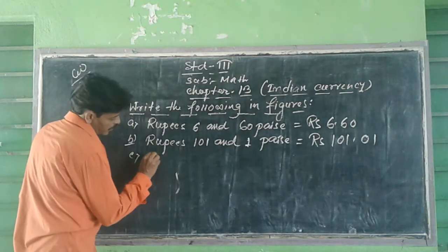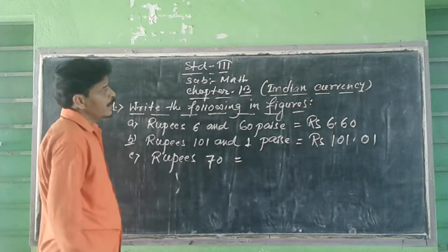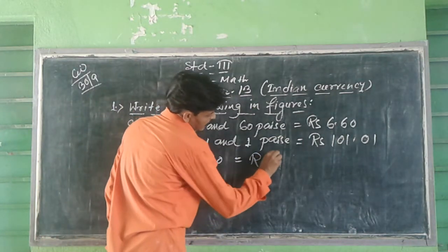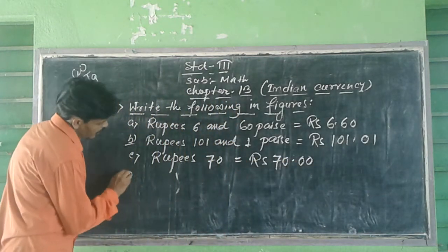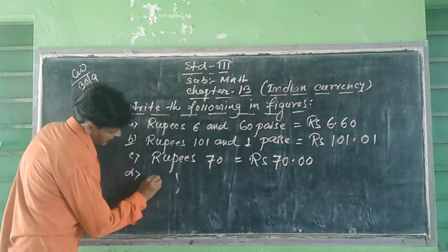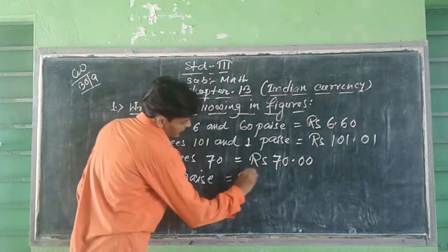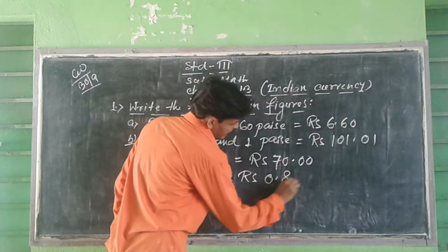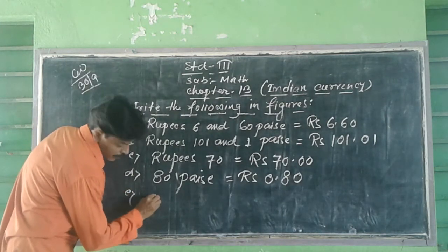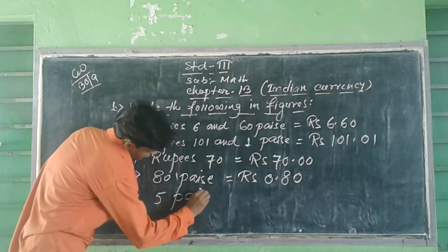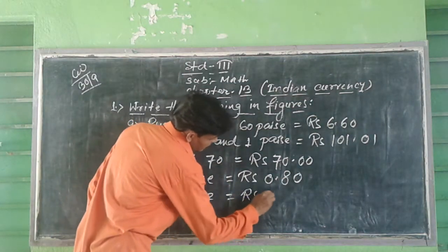Question 1c: Rupees 70 is written as figure equal to Rupees 70.00. Question 1d: 82 paise is written as figure equal to Rupees 0.82. Question 1e: 5 paise is written as figure equal to Rupees 0.05.